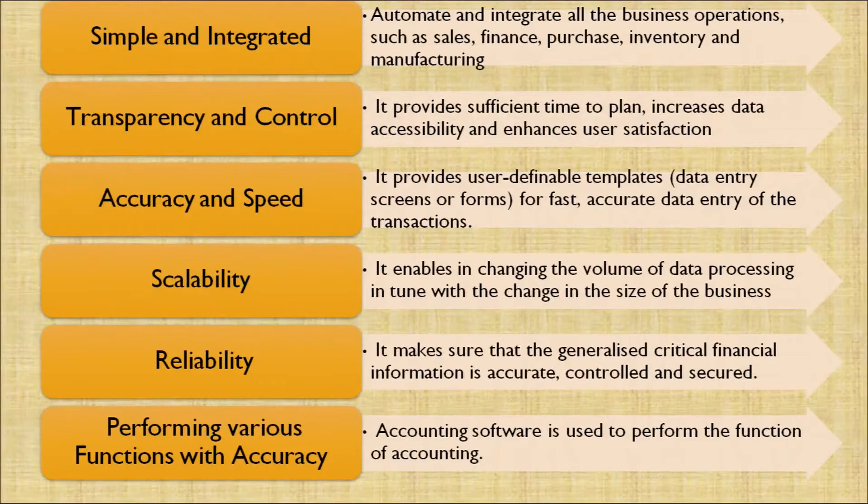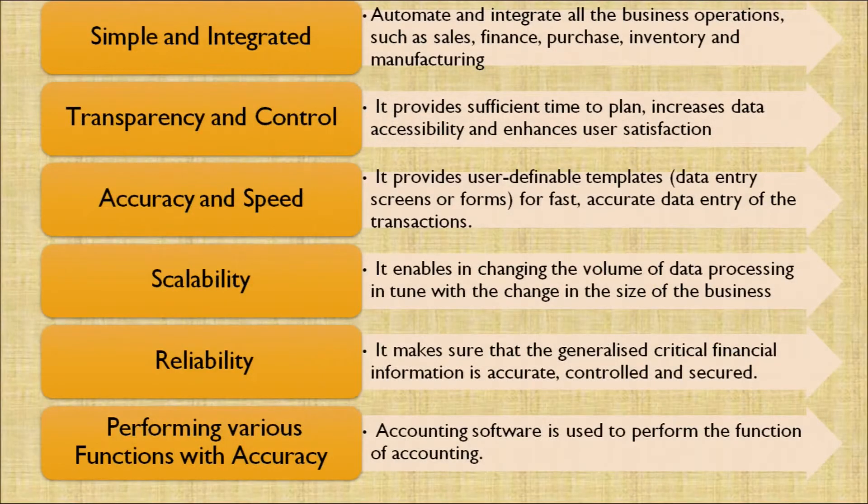Fourth, scalability: it enables changing the volume of data processing in tune with the change in the size of a business. For example, the same computer can help us from zero rupees of turnover to a thousand crore rupees of turnover. Fifth, reliability: it makes sure that critical financial information is accurate, controlled, and secured. Therefore, we can rely on the accounting entries processed through a computer-aided system.